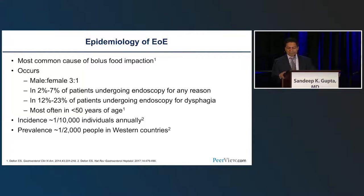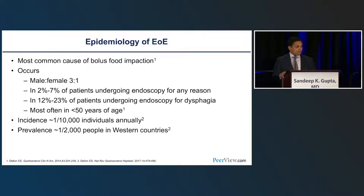For people undergoing endoscopy for any reason, two to seven percent can have EOE, so it is not uncommon for GI physicians to diagnose it. If you have a history of dysphagia, there is a roughly 20-plus percent chance of having EOE. It is more often seen under the age of 50 but can occur at any age. The incidence is generally one in 10,000 new cases per year, and prevalence is approximately one in 1,000 to 2,000 people at any given time.